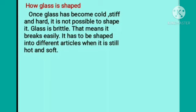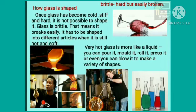How is glass shaped? Once glass has become cold, stiff and hard, it is not possible to shape it. Glass is brittle — that means it breaks easily. It has to be shaped into different articles when it is still hot and soft. Very hot glass is more like a liquid. You can pour it, mold it, roll it, press it, or even blow it to make a variety of shapes. Brittle means hard but easily broken into different pieces.